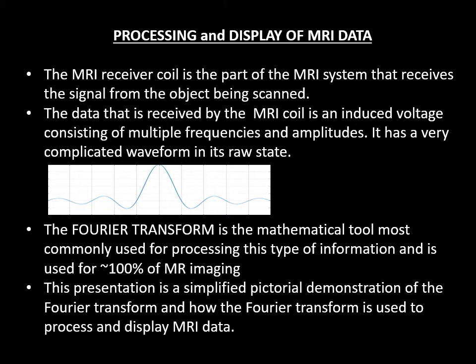The Fourier transform is the mathematical tool most commonly used for processing this type of information and is used for almost all MR imaging. This presentation is a simplified pictorial demonstration of the Fourier transform and how it is used to process and display MRI data.